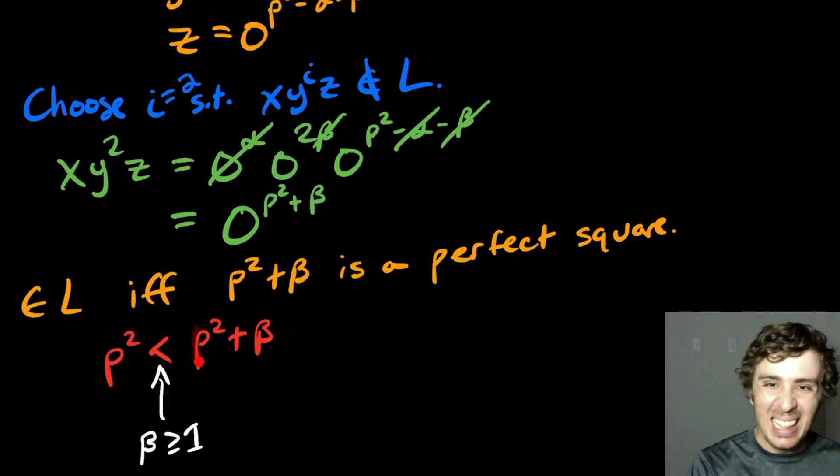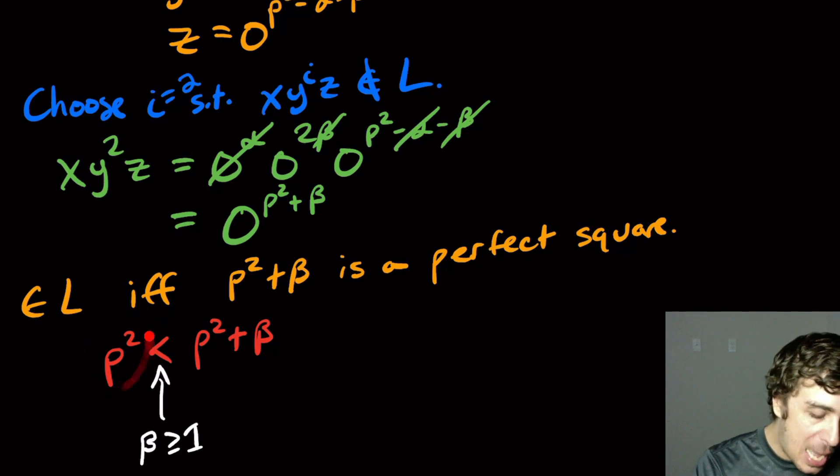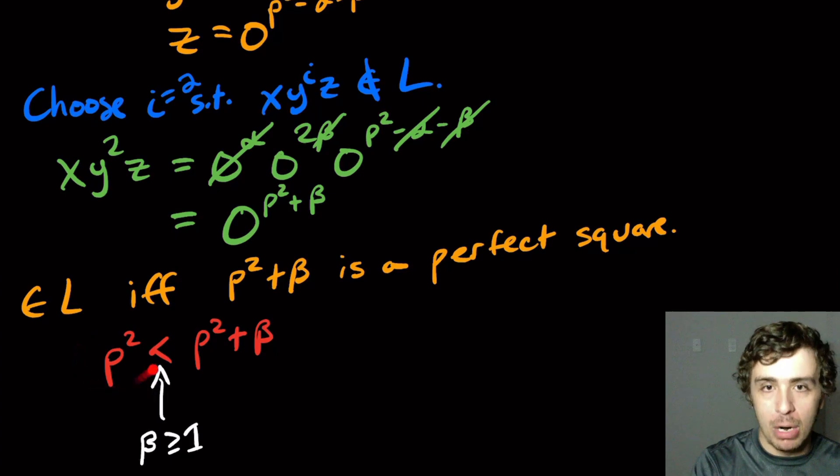So this thing is at least p squared plus one, but it could be a lot higher. But it is definitely at least one. So we know that it's not equal to this perfect square right here because it's strictly larger than it.